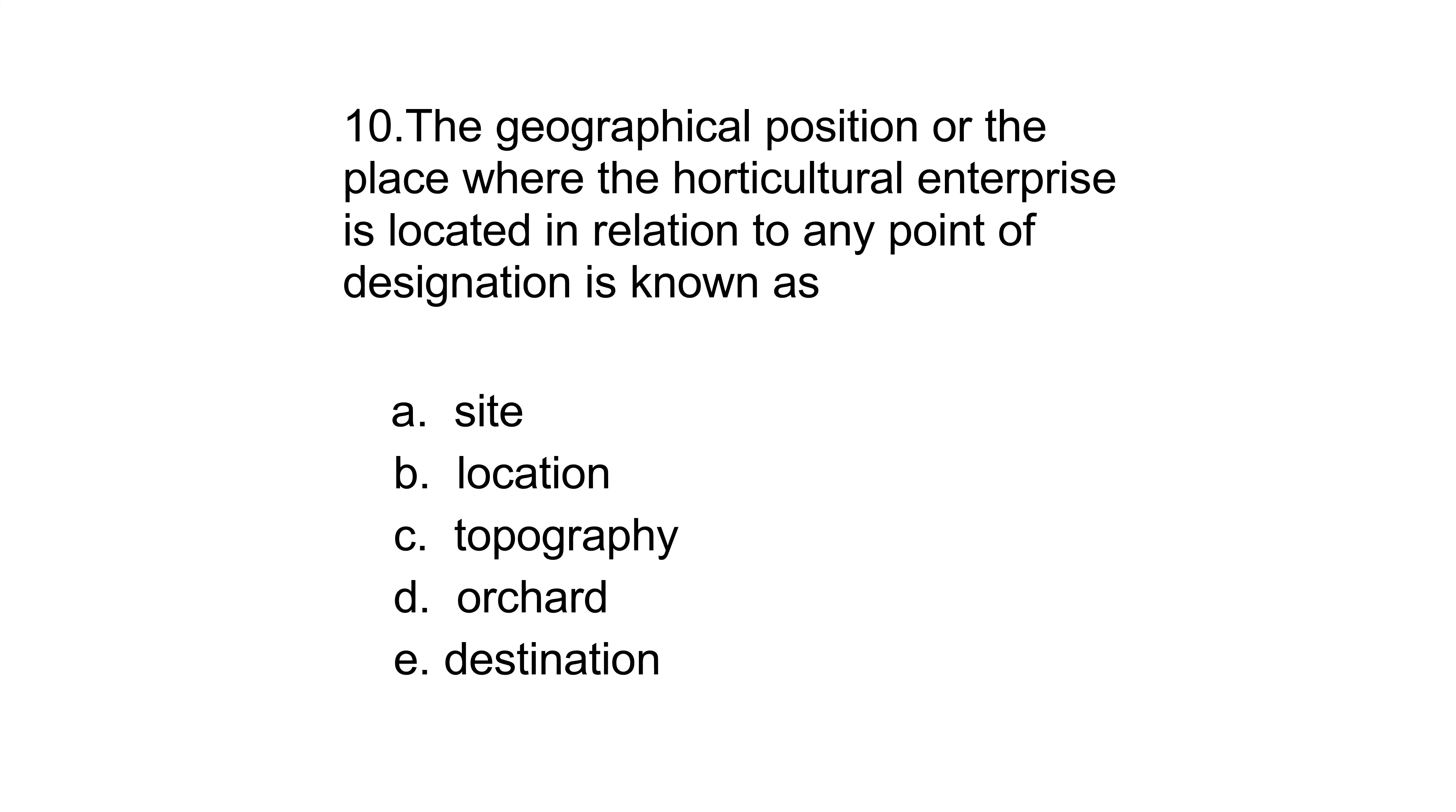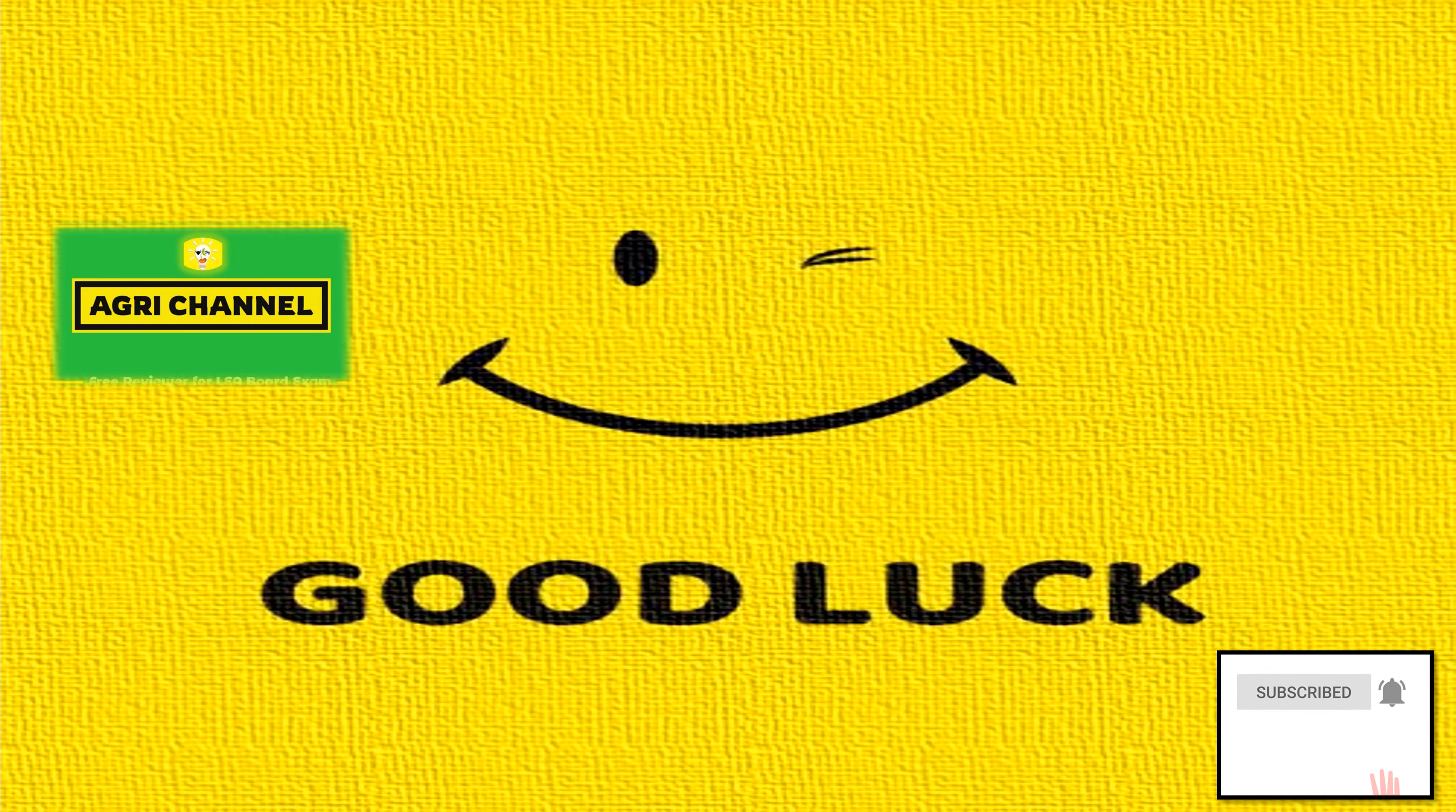Last question: The geographical position or the place where the horticultural enterprise is located in relation to any point of designation is known as site, location, topography, orchard, or destination. The answer is location.